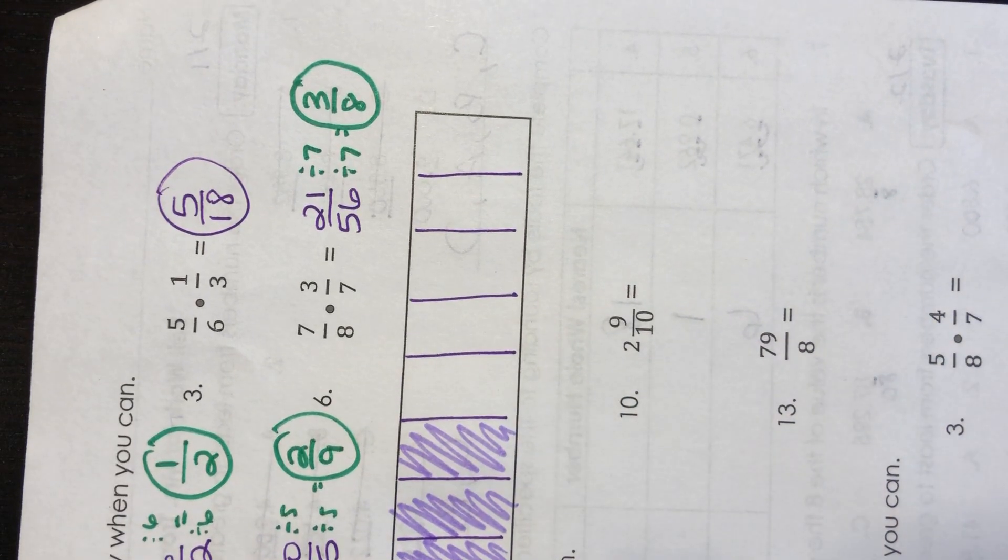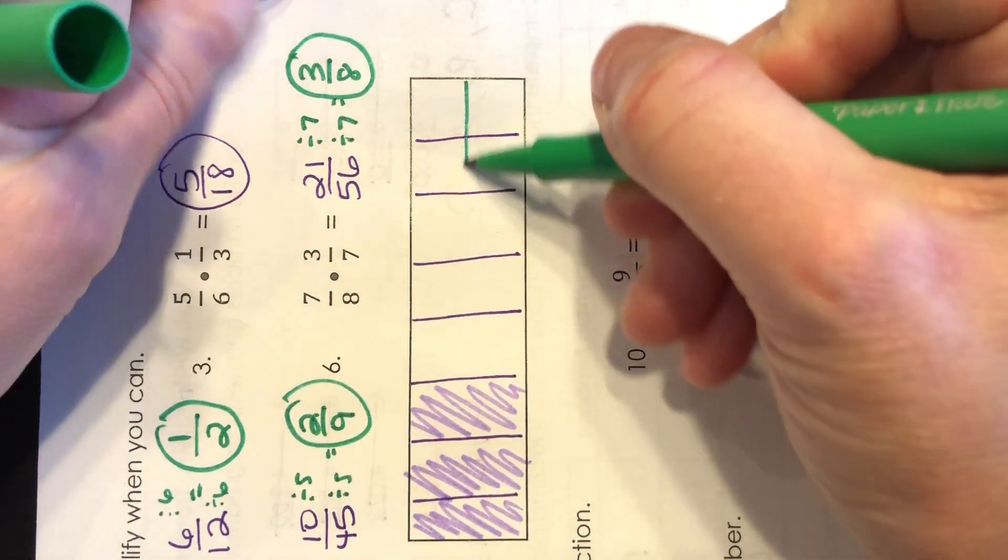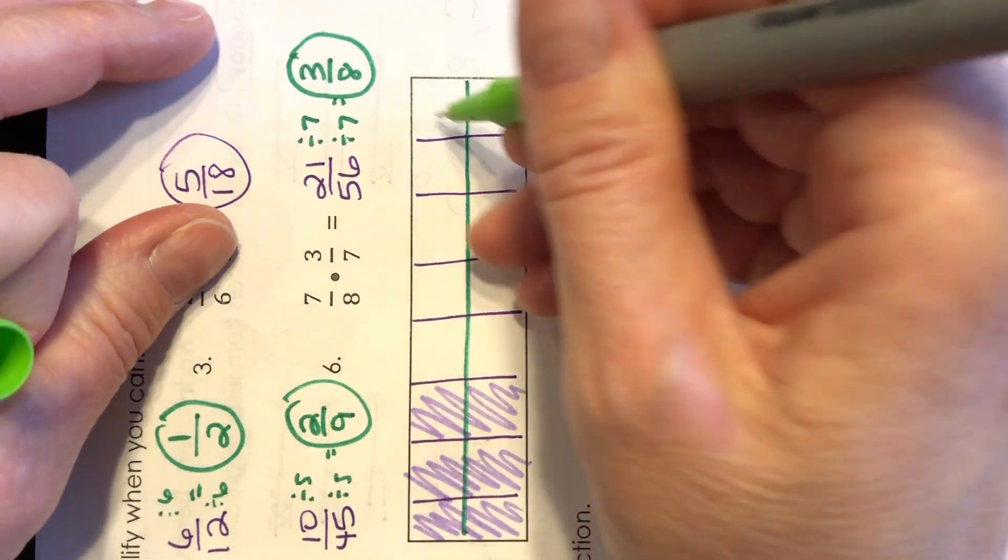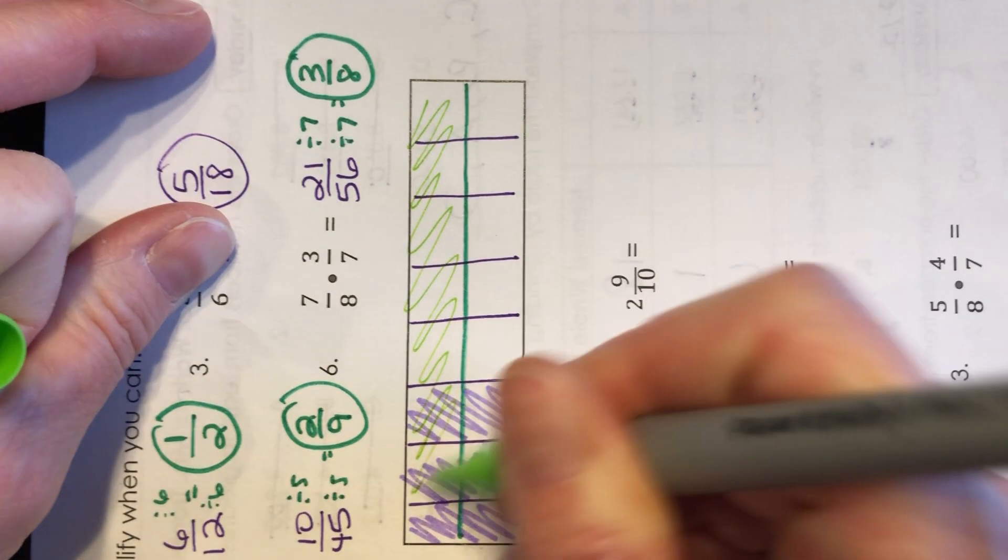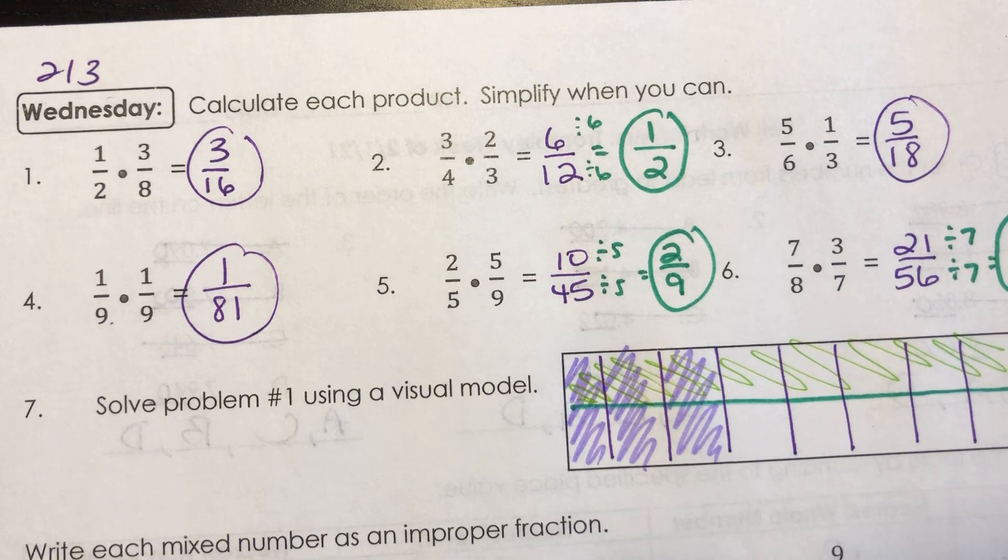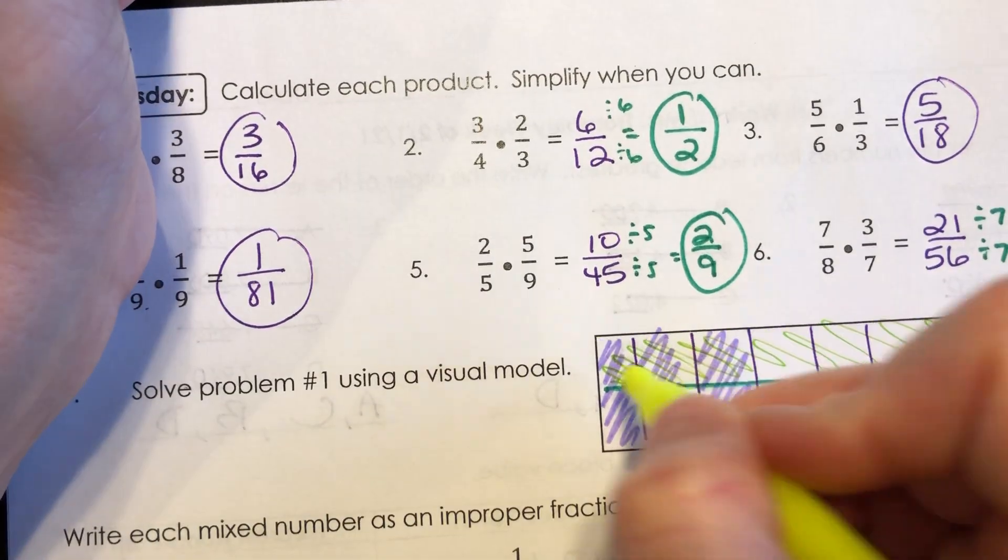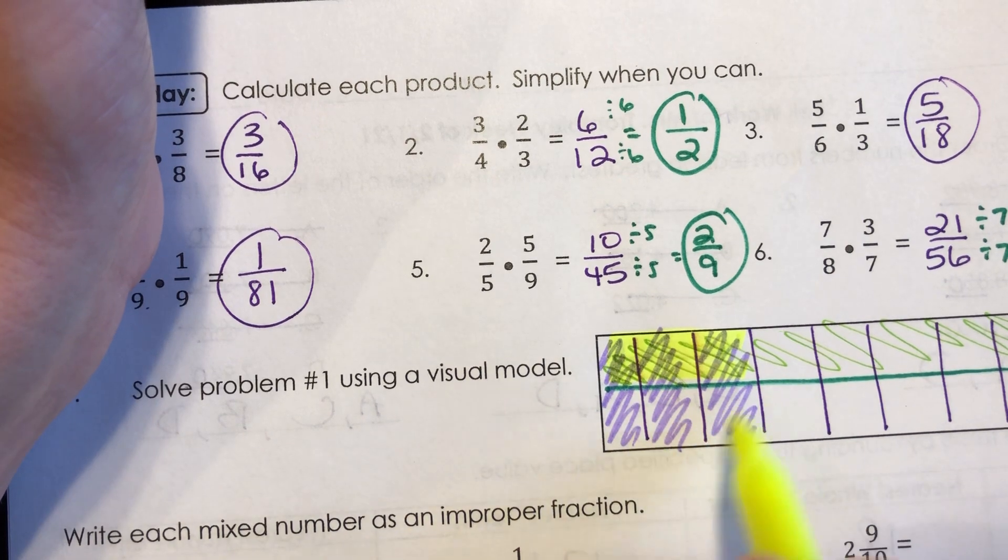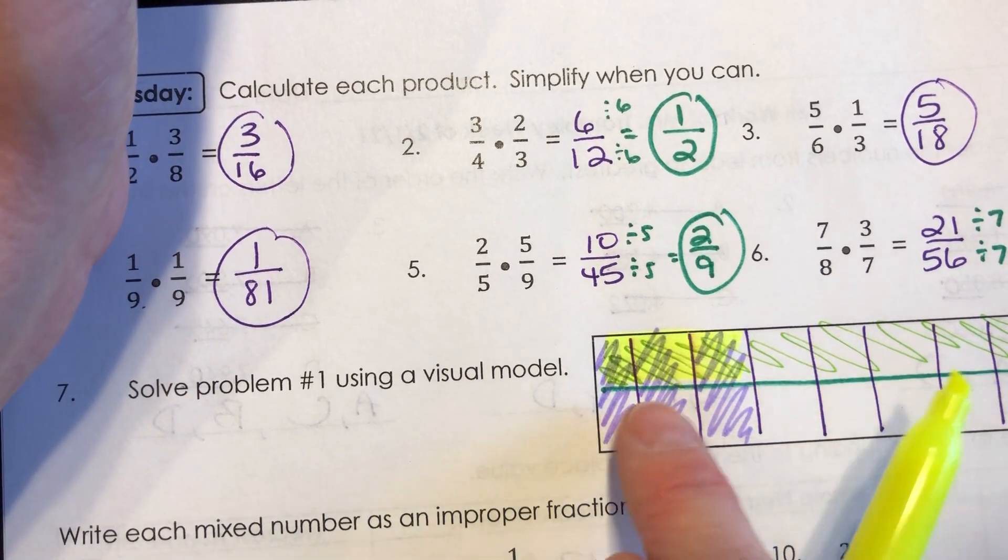Now I want to show a half because it's half of 3 eighths on the other side. So I'm going to split this whole thing in half. And 1 half would mean one of these pieces would be shaded. So that means that 1 half of 3 eighths is going to be this section right here because I only want the half of the 3 eighths part. So this doesn't mean much to my answer, neither does this.